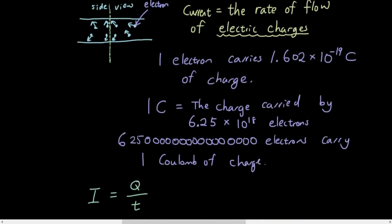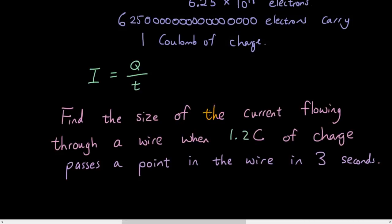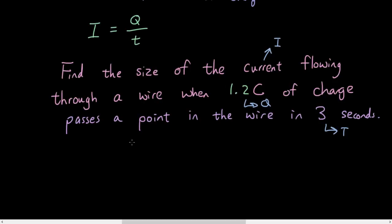So let's do a simple mathematics problem. I want you guys to try out this problem using the equation that I've given you. Find the size of the current flowing through a wire when 1.2 coulombs of charge passes a point in the wire in 3 seconds. So use the equation, get it done, come back when you are ready to see the answer.